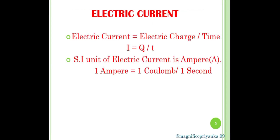Next topic is electric current. It is the flow of electric charges in a conductor. Electric current is the amount of electric charge flowing in a body in one second. It is denoted by I. The formula for electric current is electric charge upon time, that is I equals Q by T.